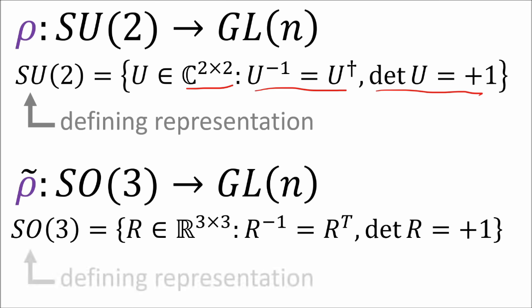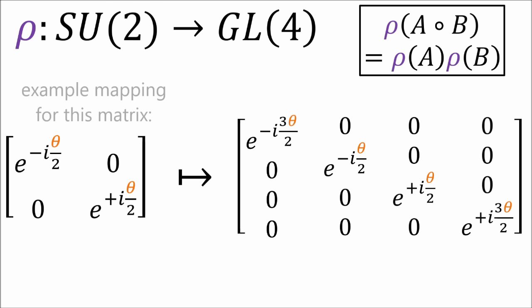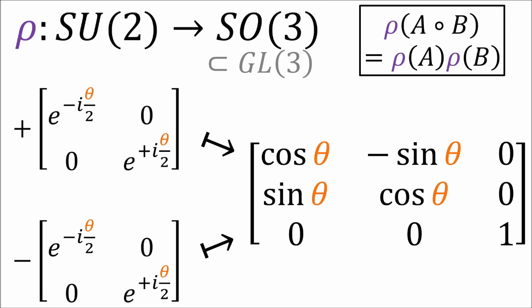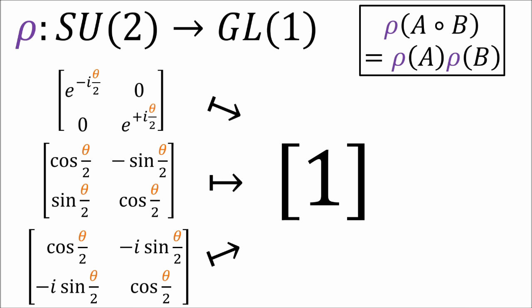With Lie groups like SU2 and SO3, the groups are defined in terms of matrices to begin with. For example, SU2 is defined as the set of 2 by 2 complex unitary matrices with determinant 1. We call these matrix definitions the defining representation of the group. But we can find matrices of other sizes that satisfy the conditions of a representation. For example, it's possible to map all SU2 matrices to a set of 4 by 4 matrices which obey all the same matrix multiplication rules.